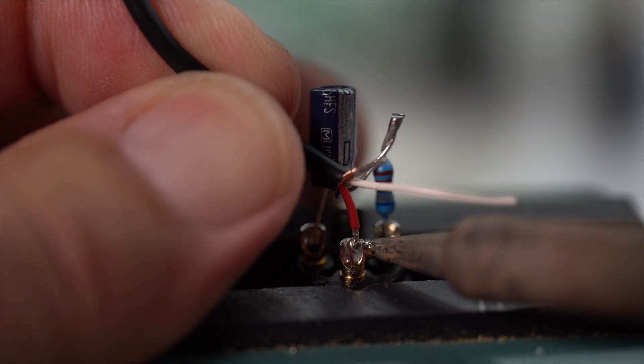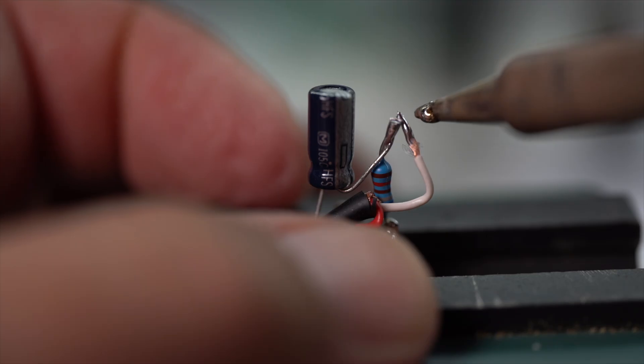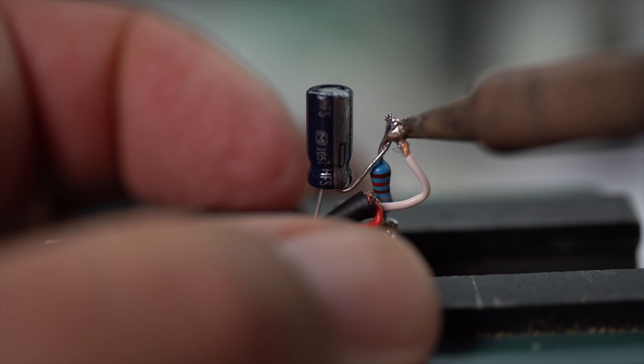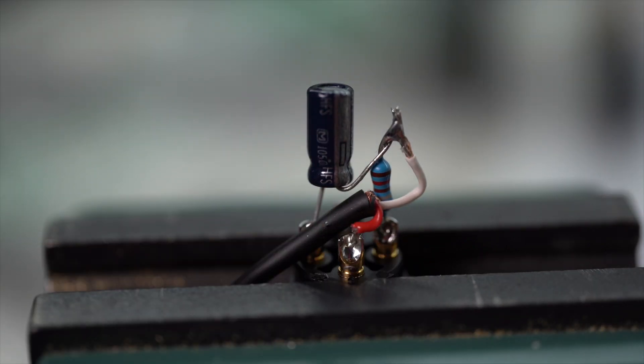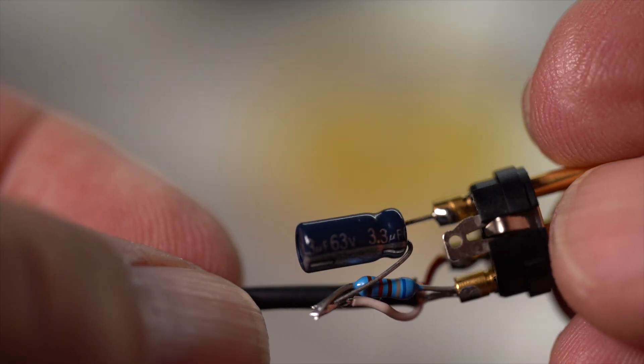The red wire connects to pin three of the XLR connector. The white wire connects to the junction of the resistor and capacitor. Once these are connected, inspect your work making sure that everything is connected and there are no shorts.